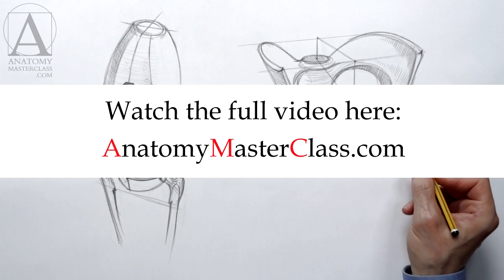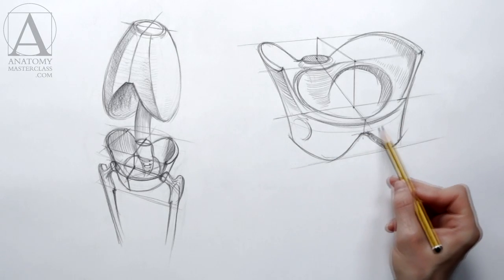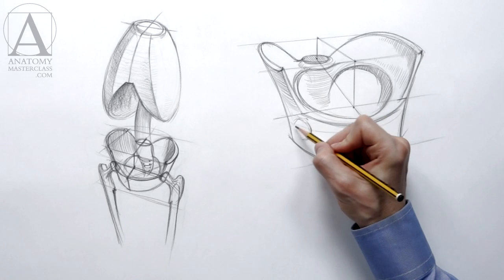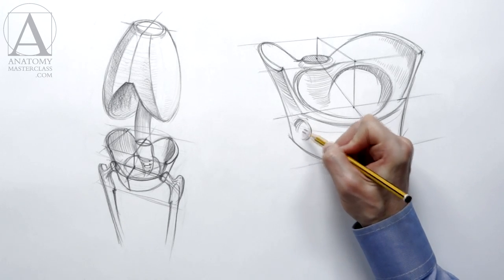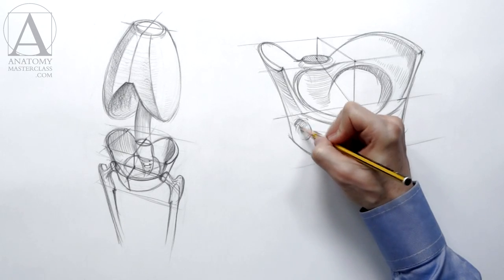The hip joint socket is located on the same level as the pubic bone. As you remember, that level is the center of the human body. It divides the height of the body in half.